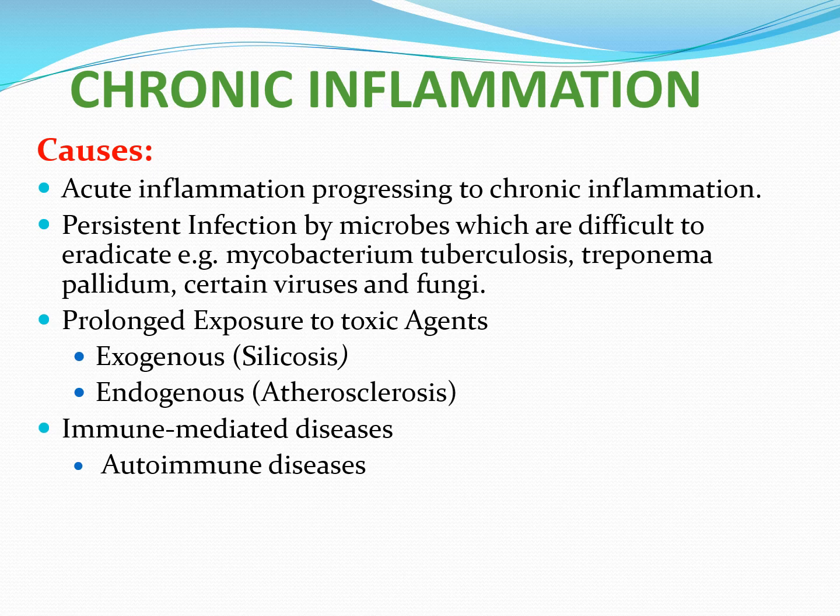Prolonged exposure to certain substances can also lead to chronic inflammation. For example, a person working in a silica factory who inhales silica can develop silicosis, a condition of chronic inflammation in the lungs — this is an exogenous substance. There are also endogenous substances, such as cholesterol, which cause atherosclerosis, a condition with a chronic inflammatory component of the blood vessels. Prolonged exposure to these substances leads to a chronic inflammatory response.